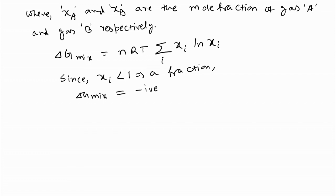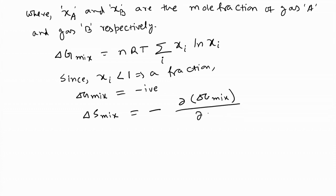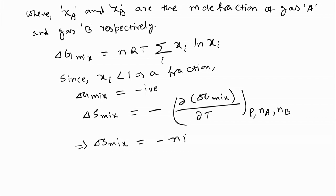We know delta S_mix = −(∂ΔG_mix/∂T) at constant pressure and number of moles. From there we can write delta S_mix = −NR Σ_i X_i ln X_i. This is positive, so the entropy of mixing is a positive quantity, as we already derived.